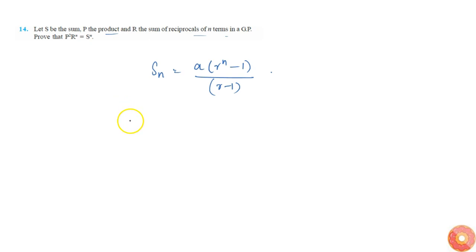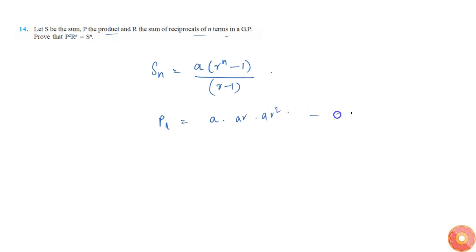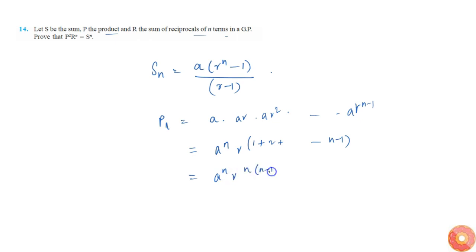P is simply the product of n terms, that is a times ar times ar squared and so on up to ar power n minus 1. This becomes a power n times r power (1 plus 2 plus ... plus n minus 1), which simplifies to a power n times r power n(n minus 1) by 2.